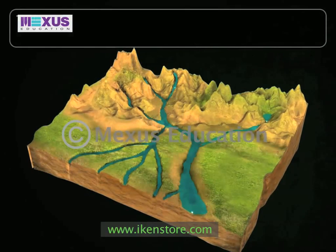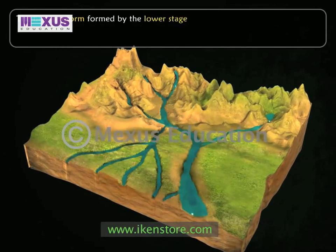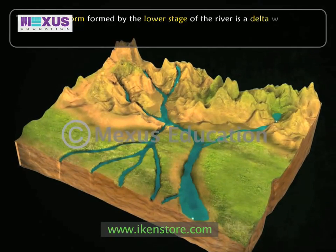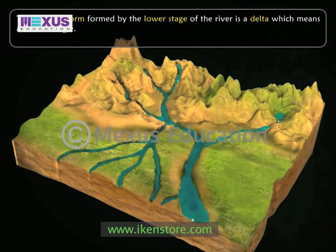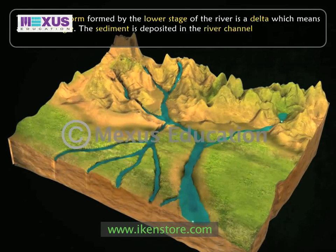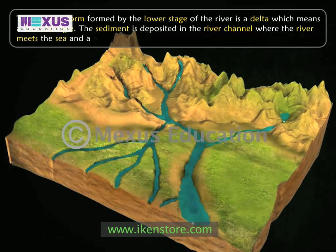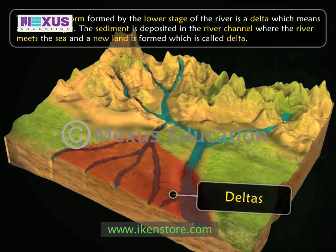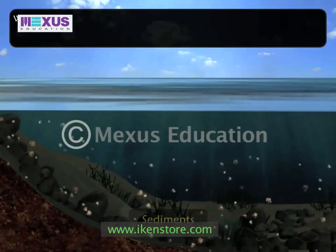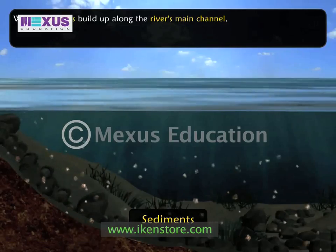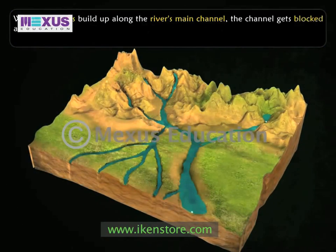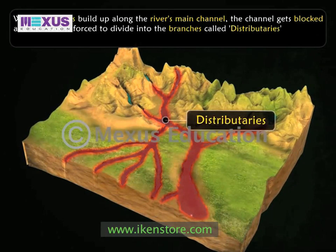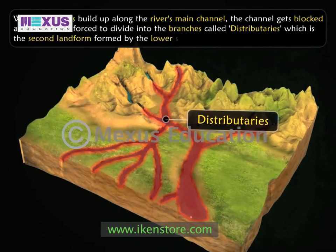The first landform formed by the lower stage of the river is a delta, meaning a small triangle. Sediments are deposited in the river channel where the river meets the sea, and a new land is formed which is called a delta. When sediments build up along the river's main channel, the channel gets blocked and the river is forced to divide into branches called distributaries, which is the second landform formed by the lower stage.